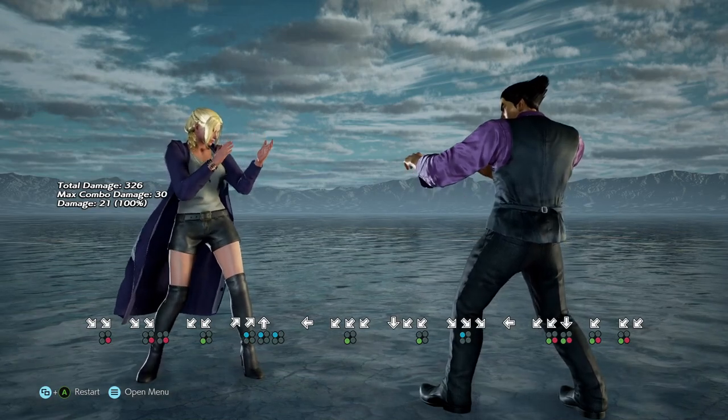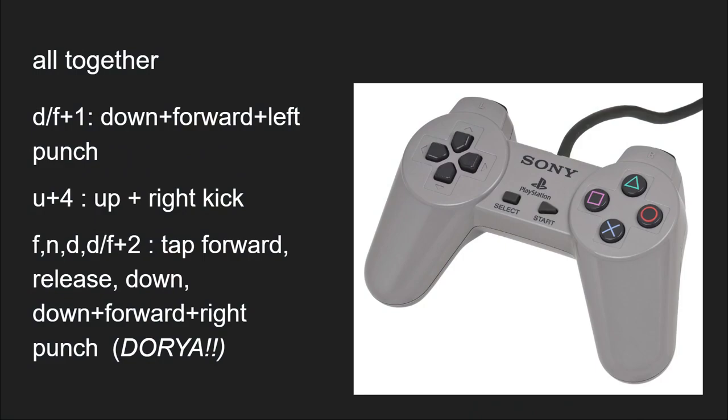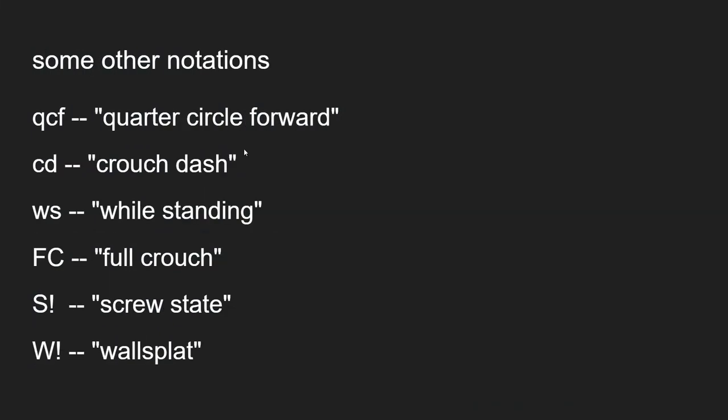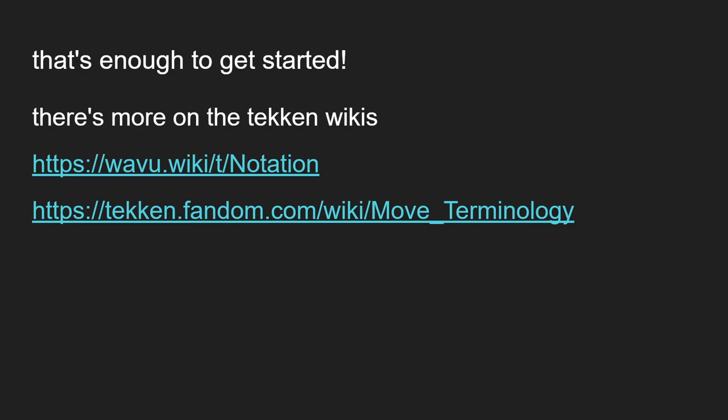That's it — that's how we talk about attacks in Tekken. There are a few other shorthand notations people use, like while-standing attacks, crouch dashes, quarter circles, and notations for stances on particular characters or wall combos, but this is enough to get you started. To close it up: 1 is left punch, 2 is right punch, 3 is left kick, 4 is right kick, and letters for directions. For more extended notations, check out the pages linked in the description. Now you understand Tekken notation — thanks for watching, hope you're having a lovely day, and have fun playing Tekken!